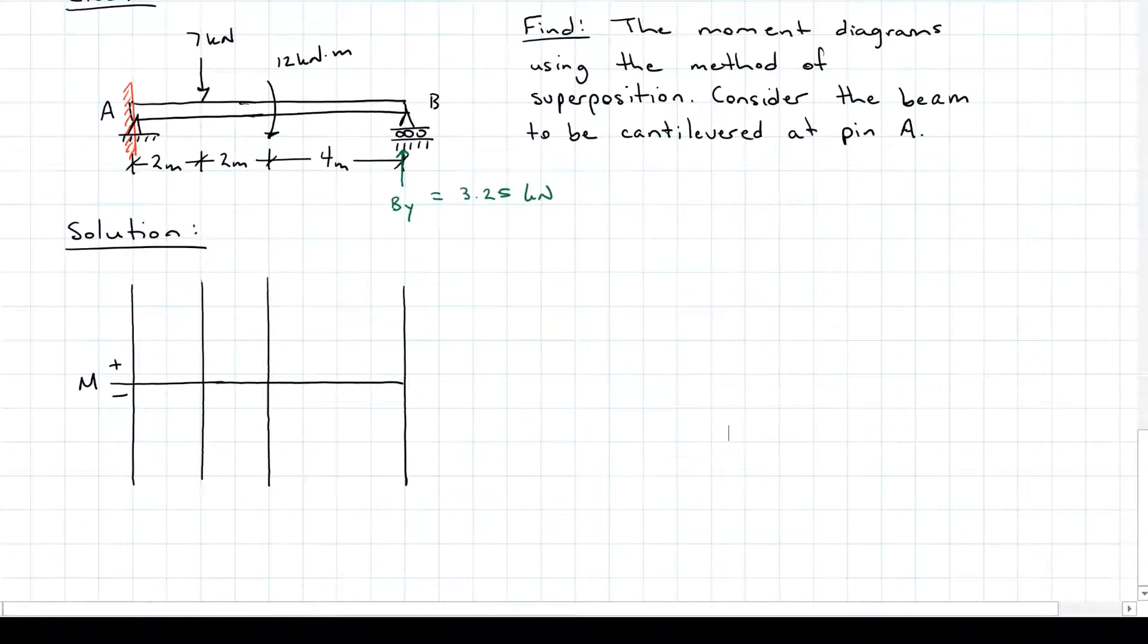Working from left to right, I've got seven kilonewtons as a point load acting down. So I'm going to have my straight line here of seven times two, which is 14 kilonewton meters.